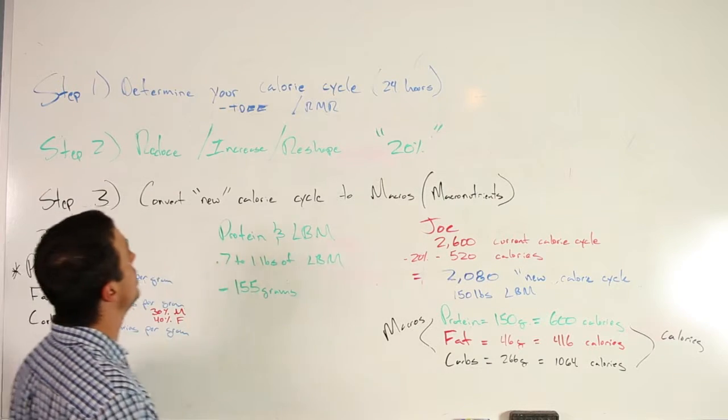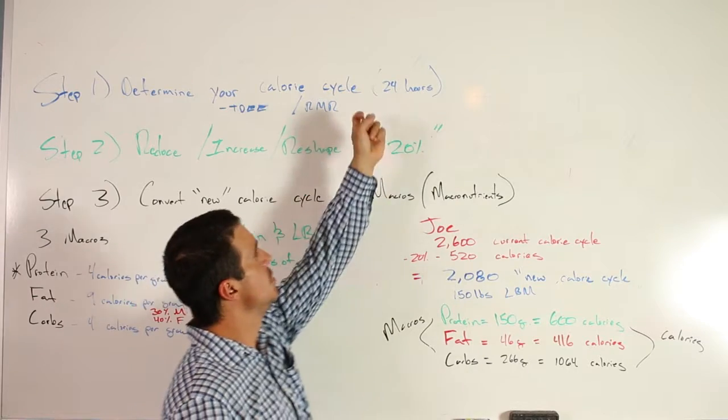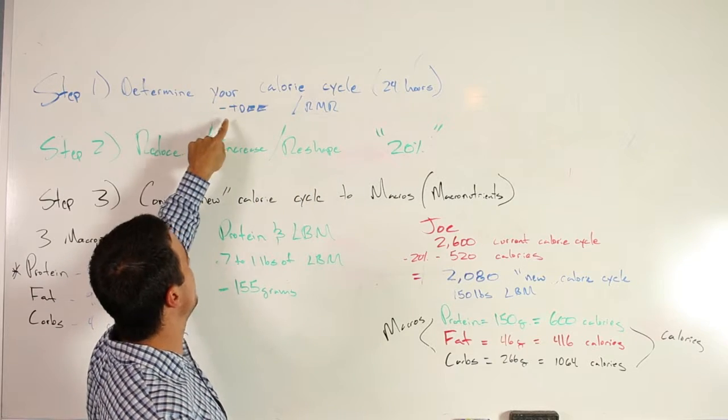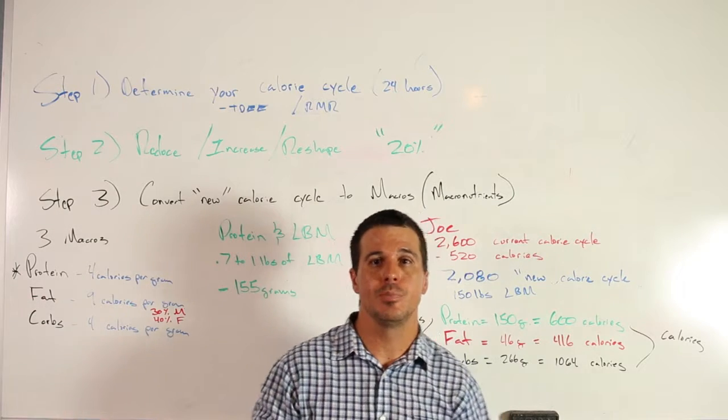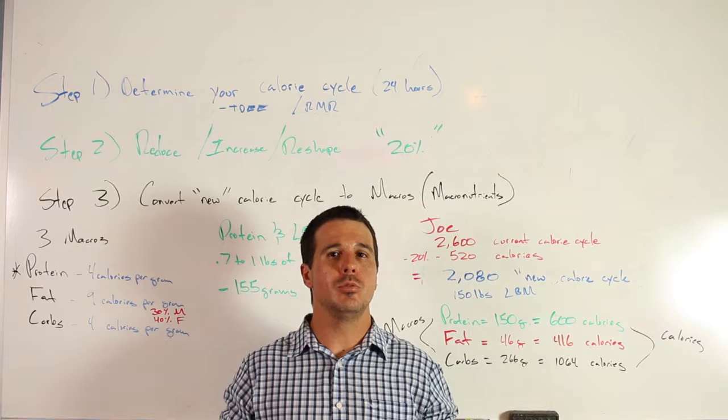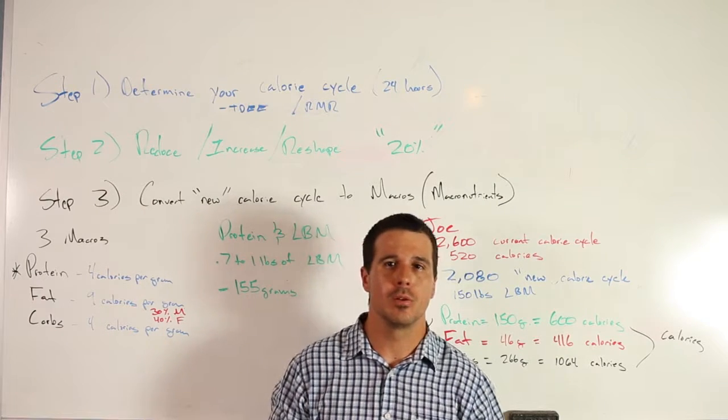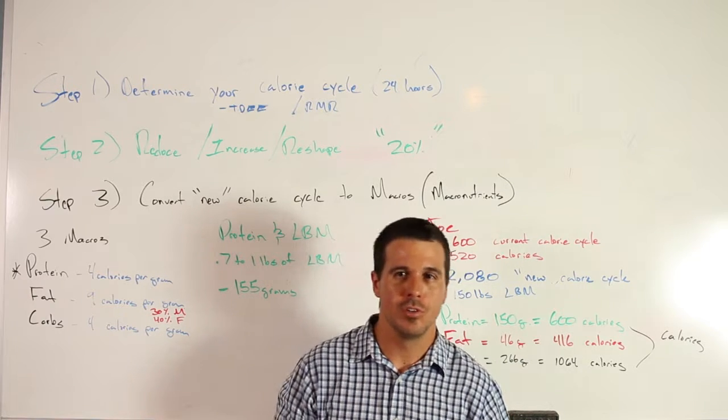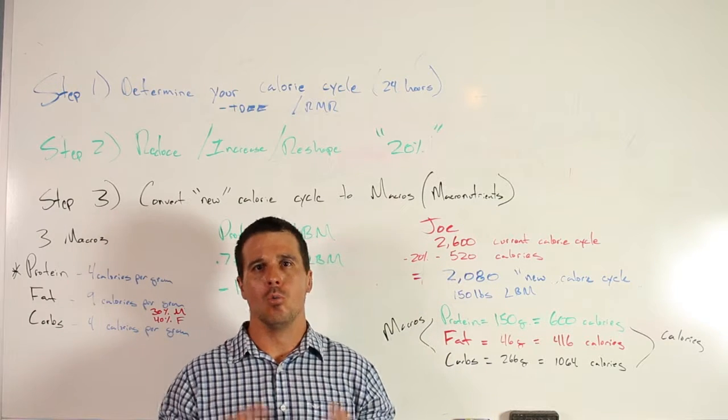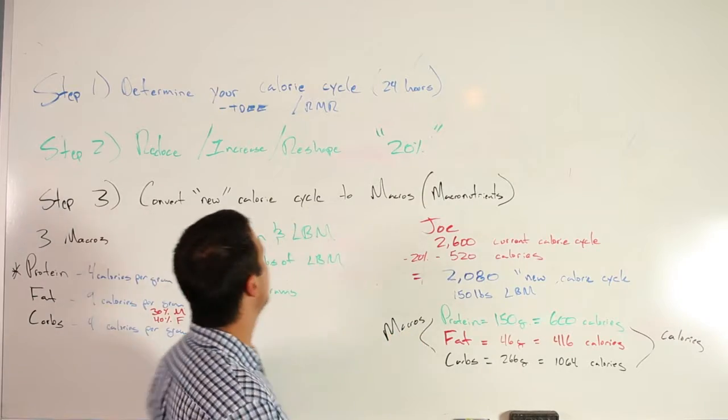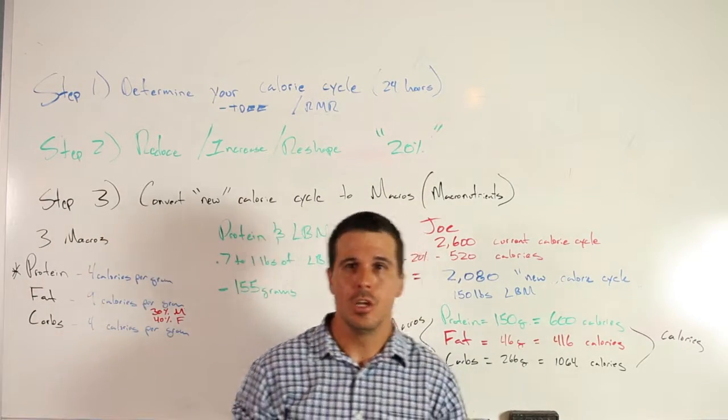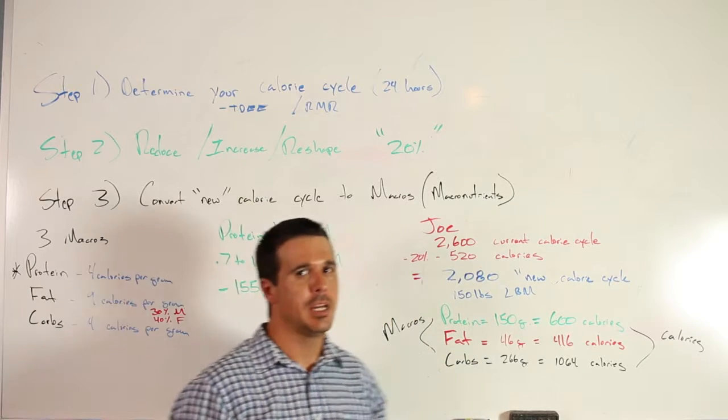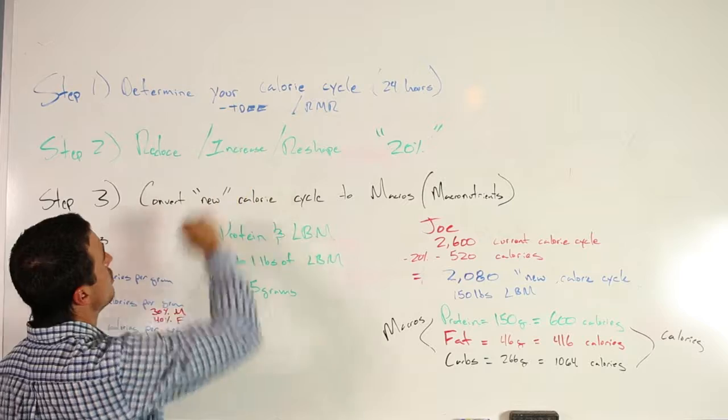Step one: you need to determine your current calorie cycle, which runs off a 24-hour cycle. You may have heard of your resting metabolic rate - we like the TDEE formula, which is your total daily energy expenditure. Basically, what that means is what your body uses on a 24-hour cycle - eating, sleeping, any exercise you get, brushing your teeth, walking to the car, sitting at your office, or if you have a high physical activity job. You can find this information online or purchase it through our nutrition book where we've laid it all out in very simple, easy to formulate material.